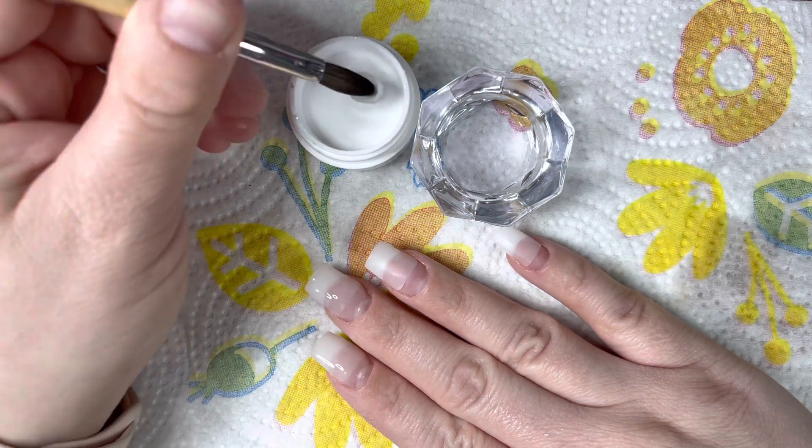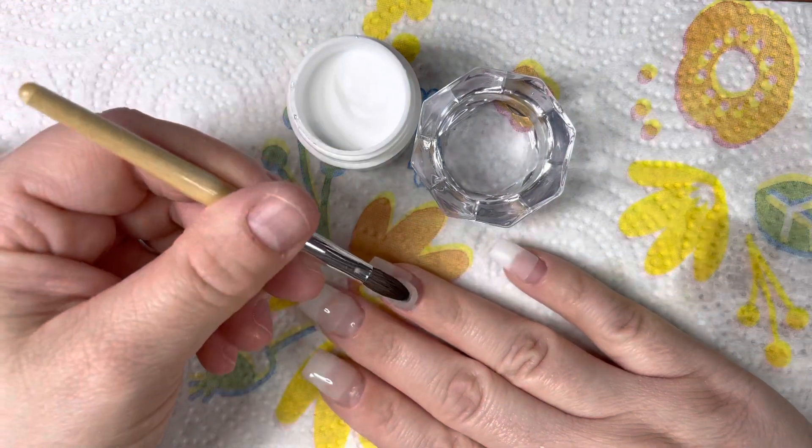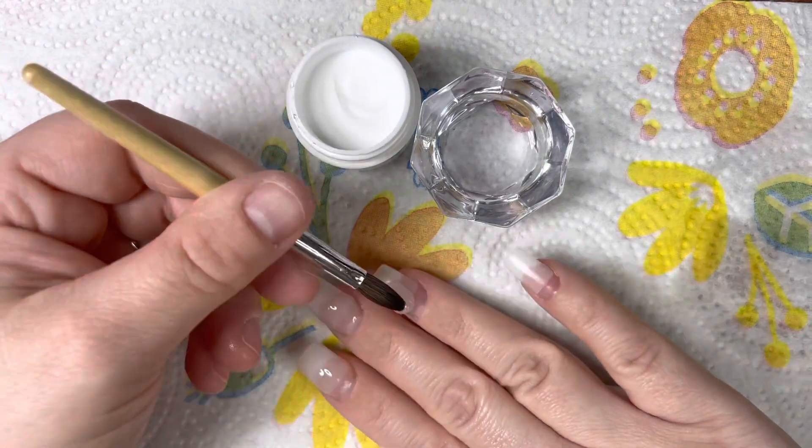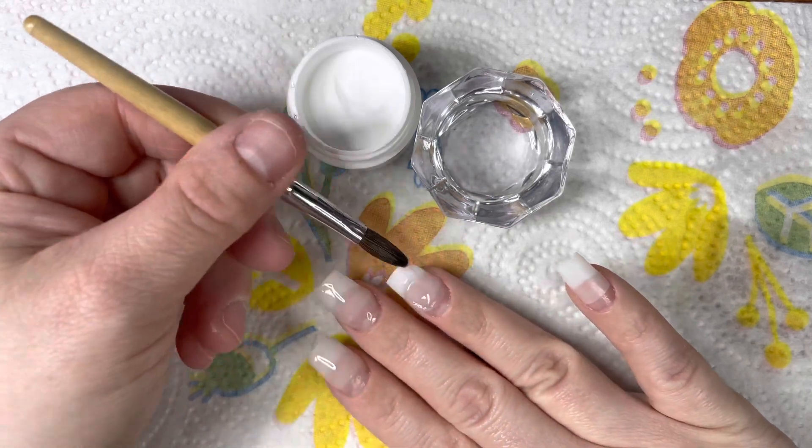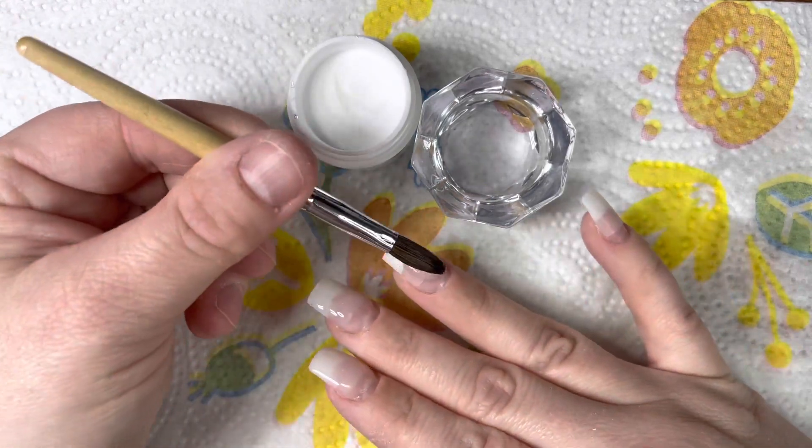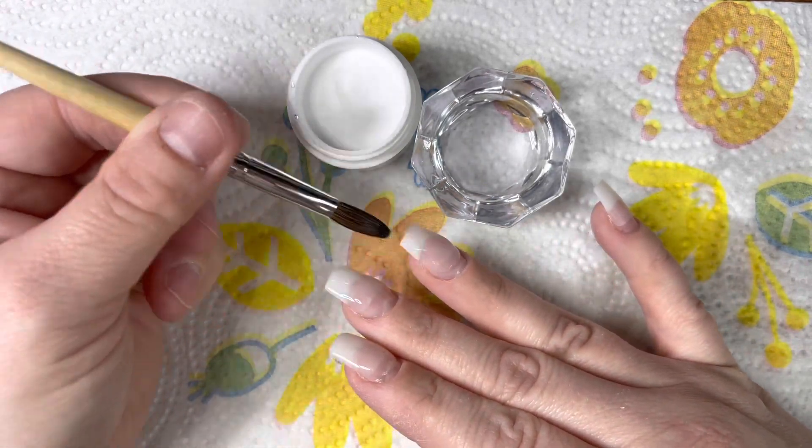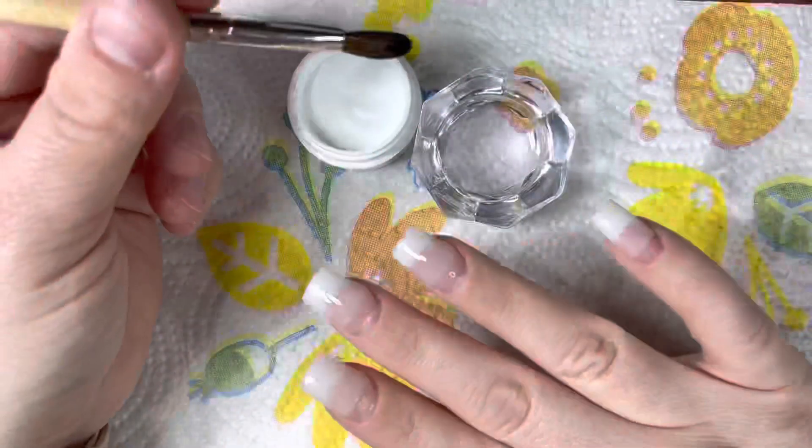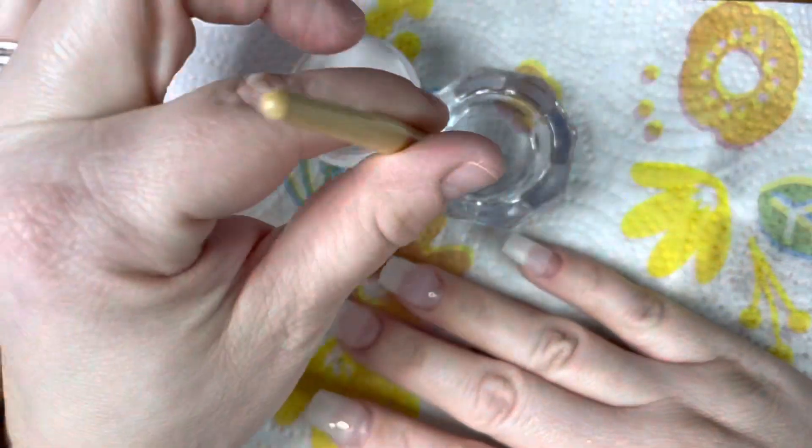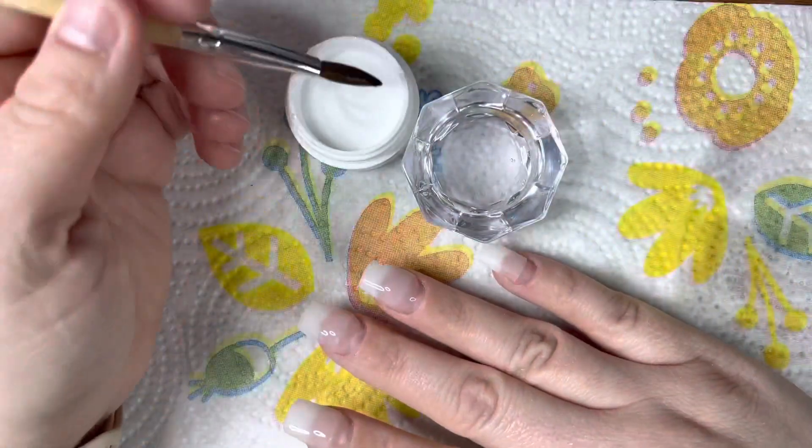Now I wouldn't use this monomer if you were going to use clear to encapsulate something because it won't be clear enough. I would suggest using a regular monomer if you want to clear cap something like glitter or sequins.